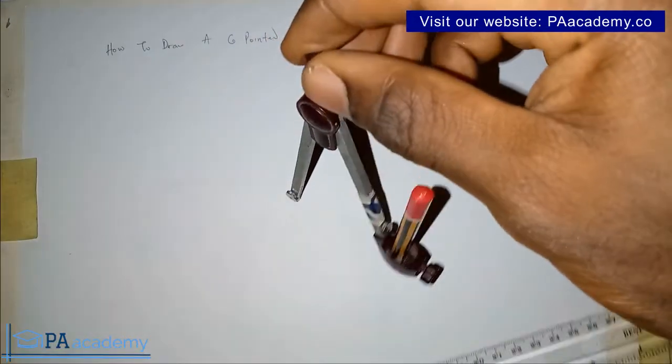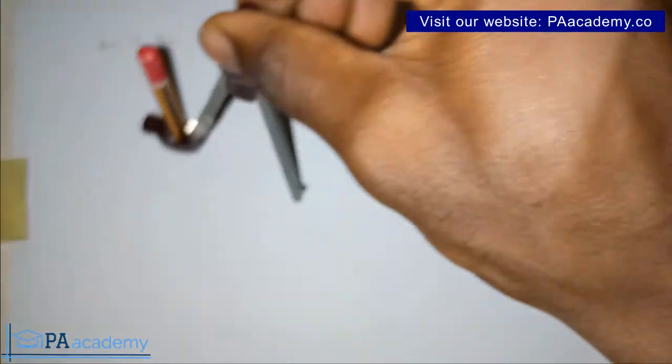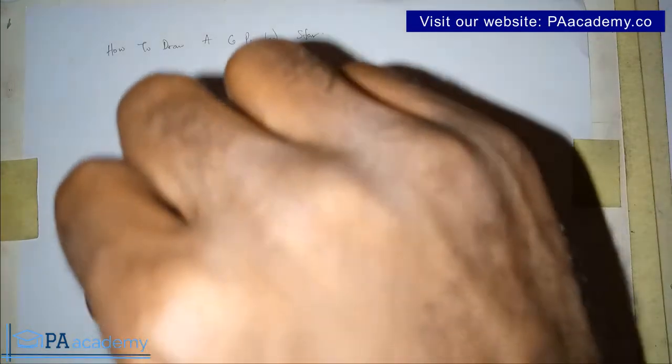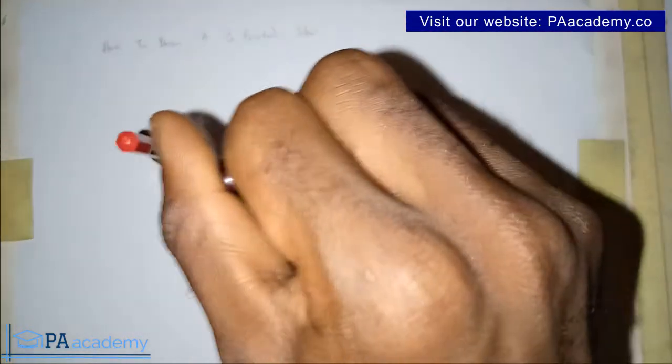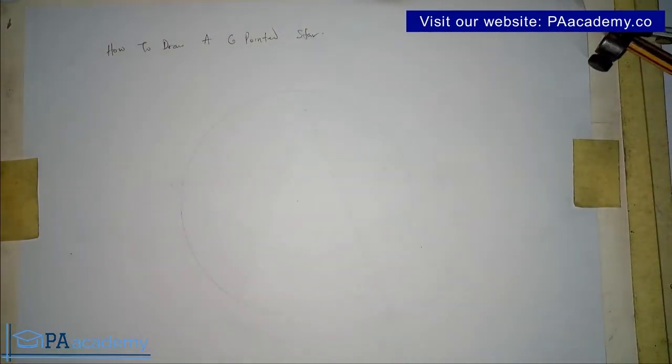Now I'm going to draw a circle and the circle I'm going to be drawing, I'm going to draw it with a faint line. That is a thin line. I hope you can see this. So let me just make it a little bold. But it should be very faint, very faint. So I hope you can still see this. So now I already have my circle.